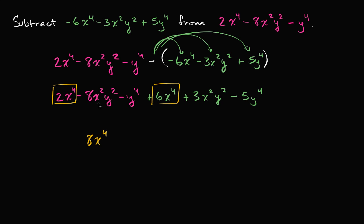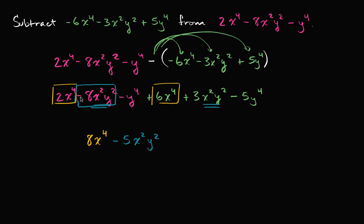And now we have the x squared y squared terms. We're subtracting 8 of them, and over here we're adding 3 of these x squared y squared terms, so we can add these coefficients. We can view this as negative 8x squared y squared plus 3x squared y squared. Well, negative 8 plus 3 is negative 5, so that gives us negative 5x squared y squared.